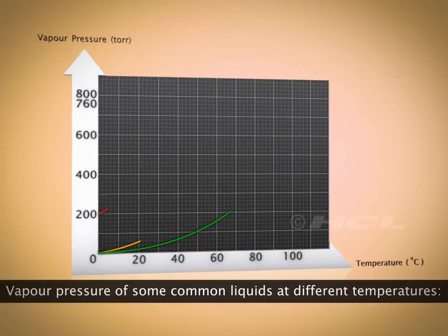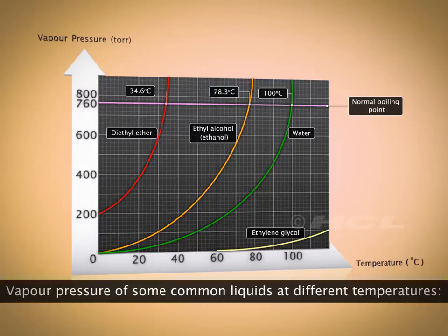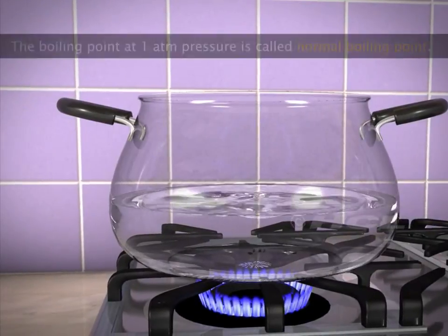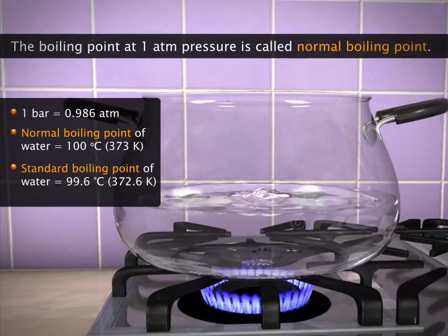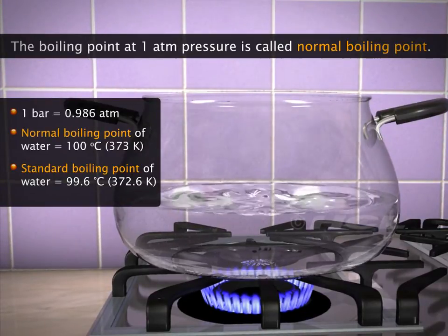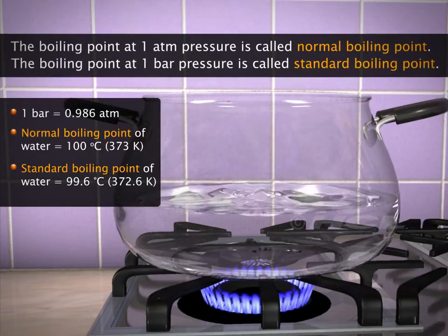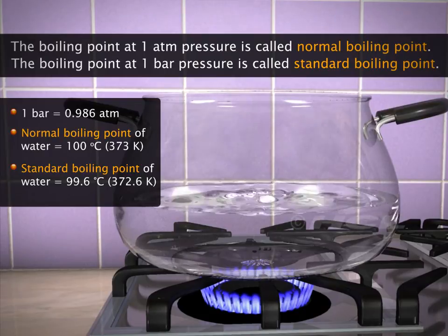Let us observe the vapor pressure of some common liquids at different temperatures. The boiling point is normal when the external pressure is 1 atmosphere or 101 kilopascals. However, it is called standard boiling point when the external pressure is 1 bar.